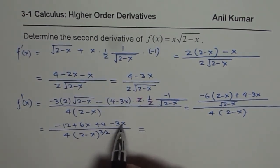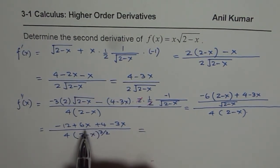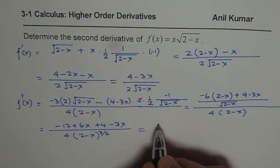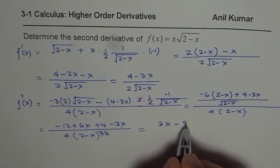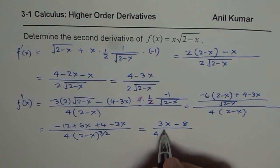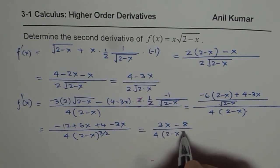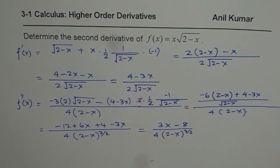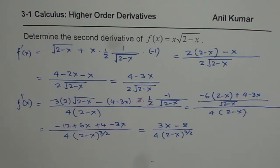Now simplify this, minus 12 and 4 gives you minus 8, 6x minus 3x gives you 3x. So we get 3x minus 8 divided by 4 times 2 minus x to the power of 3 over 2. So that is the second derivative of the given function.